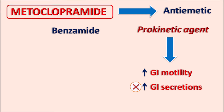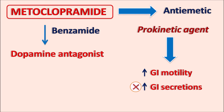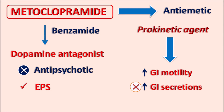This drug chemically belongs to the class of benzamides and acts on multiple receptors. One of the targets for metoclopramide is the dopamine receptors, so metoclopramide acts as a dopamine antagonist. Normally dopamine antagonists are used as antipsychotics, but metoclopramide is not clinically used as an antipsychotic — still this drug can produce the same side effects, including extrapyramidal side effects.